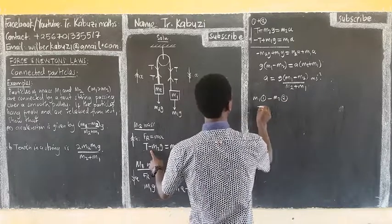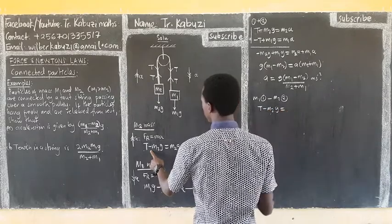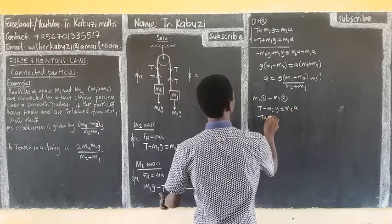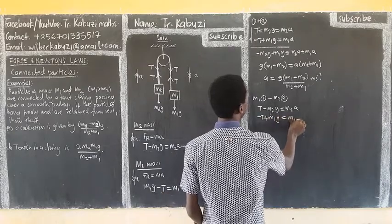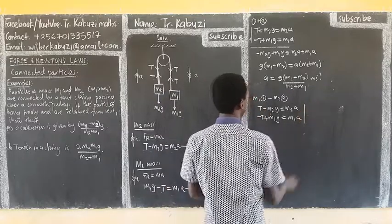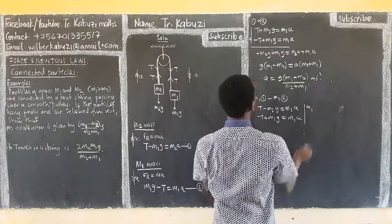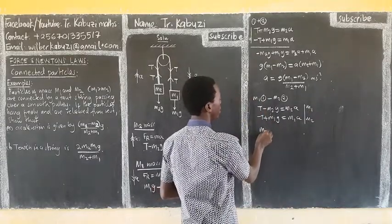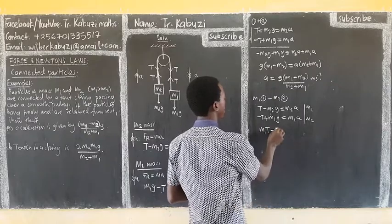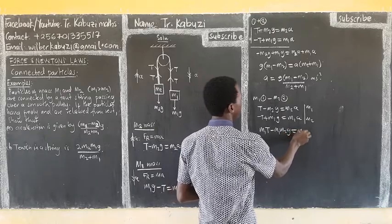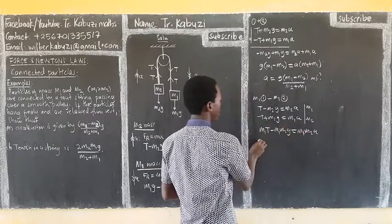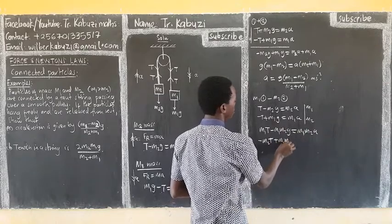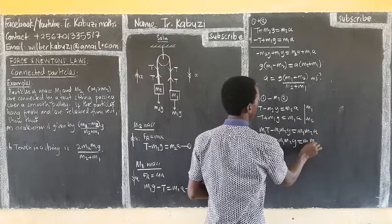So we have T minus M2g equaling to M2a, then this one is having M1g minus T equaling to M1a. So here, we are applying through. Here, we are getting M1, equation 1, then M2 equation 2. Let me multiply. This times this. Get M1T, then minus M1M2g, equal to M1M2a. Then this side you get negative M2T plus M1M2g, equal to M1M2a.